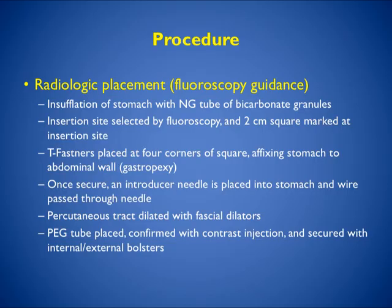With radiologic placement, fluoroscopy is typically used. The stomach is insufflated with an NG tube and bicarbonate granules. The insertion site is selected by fluoroscopy and a two-centimeter square is marked. T-fasteners are placed at the four corners of the square, affixing the stomach to the abdominal wall. Once secure, an introducer needle is placed into the stomach and a wire is passed through. The percutaneous tract is dilated with fascial dilators, the PEG tube is placed, confirmed in position with contrast injection, and secured with internal and external bolsters.